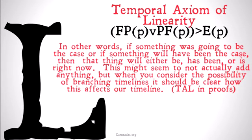In other words, if something was going to be the case, or if something will have been the case, then that thing either will be, has been, or is right now. This might seem to not actually add anything, but when you consider the possibility of branching timelines, it should be clear how this is going to affect our timeline.